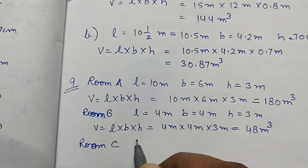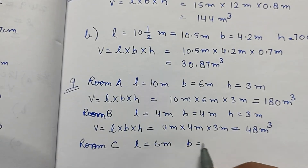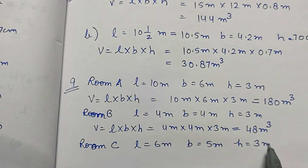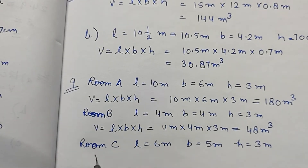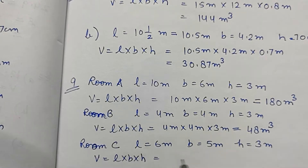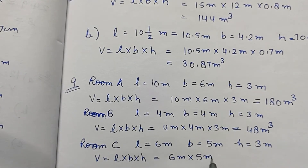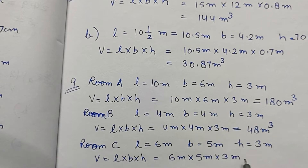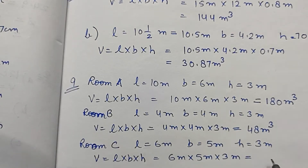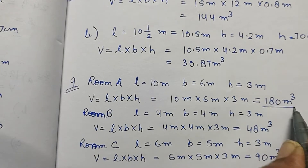Room C: length is 6 meters, breadth is 5 meters, and height is 3 meters. So volume is L into B into H — 6 meter into 5 meter into 3 meter. 5 times 3 is 15, and 6 times 15 is 90 meter cube.